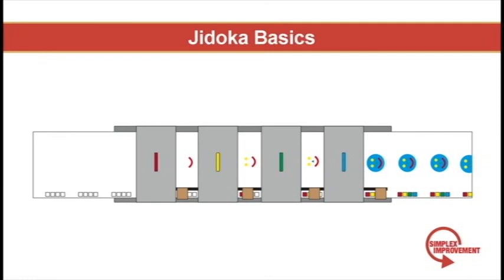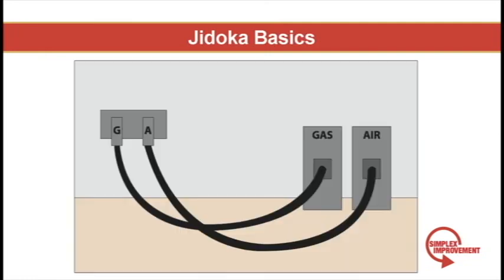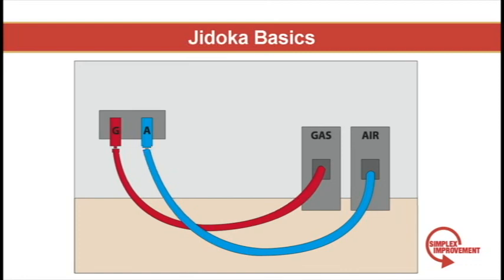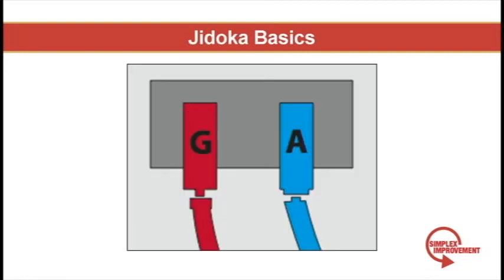So what do I mean by poka-yoke? This is a real example from the shipyard. Welders used to mix gas and air lines on their welding machines. This not only caused downtime but was also a potential safety risk. So we color-coded the fixtures and the tips for the gas and air lines. This reduced the errors, but they were still occurring. So we color-coded the entire lines. This again helped, but didn't prevent errors from occurring. We finally made gas fixtures male and air fixtures female to poka-yoke this process. Gas and air lines physically could not be mixed up anymore.